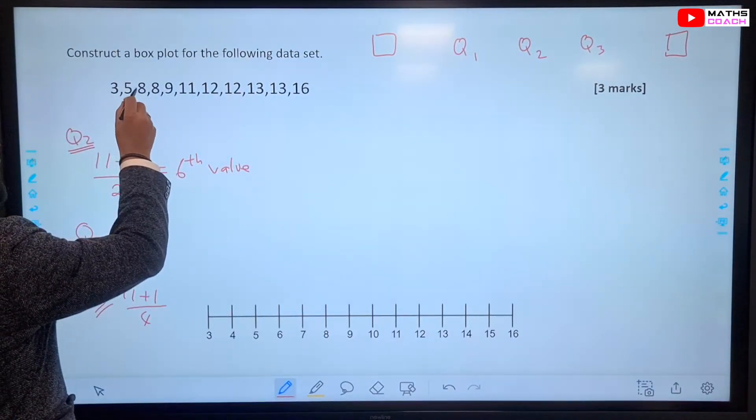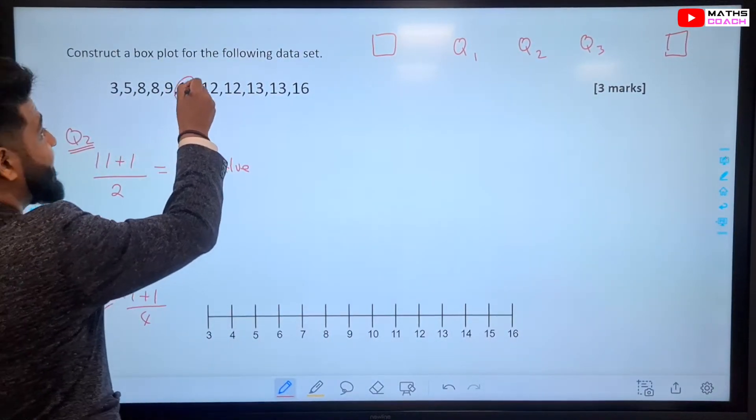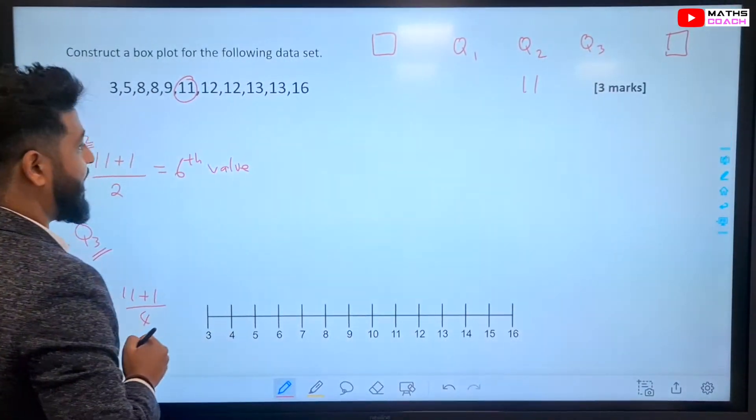Let's go back to this now. So, that's going to be 12 divided by 2, which is 6. So, the 6th value in this data set will be our median. So, where is the 6th value? 1, 2, 3, 4, 5, 6. It is 11. So, 11 is our median.